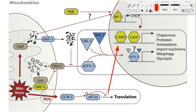Typically, misfolded proteins are held in check by various proteases that degrade them. Most importantly are CLPX, LON1, and YME1L. There's also the PARL protease, which is located on the intermembrane space.